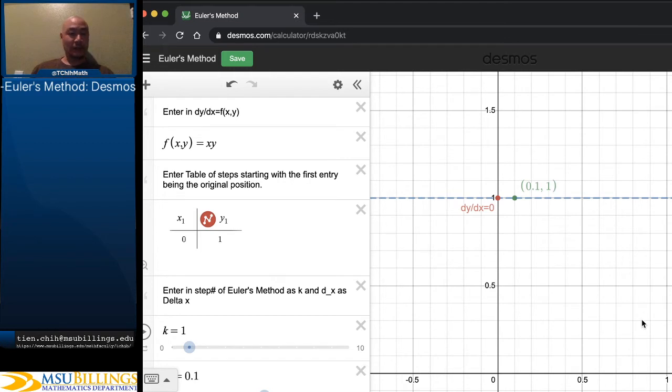Just to sort of refresh, part of the reason Euler's method is so effective is because with most differential equations, there's not necessarily a nice, easily obtainable general solution to that differential equation.